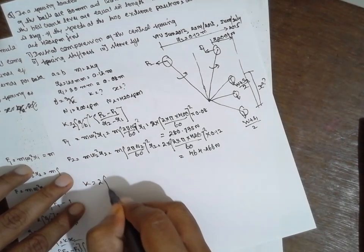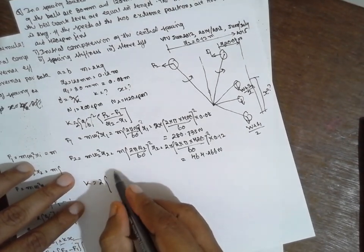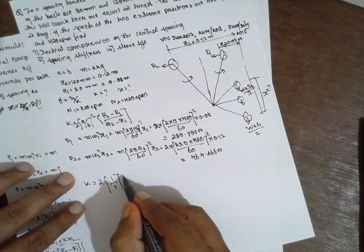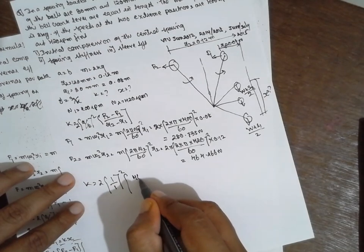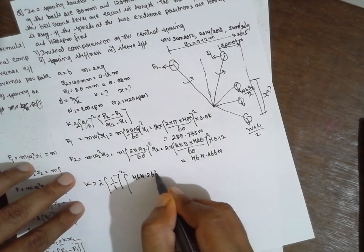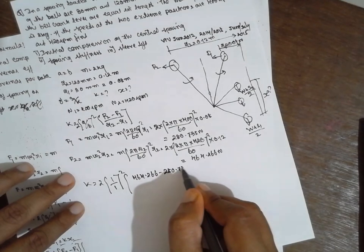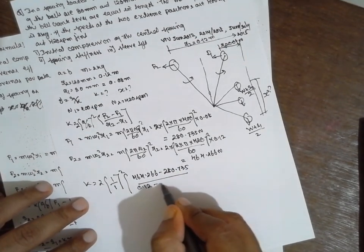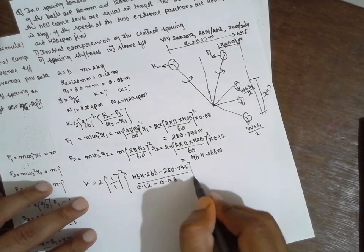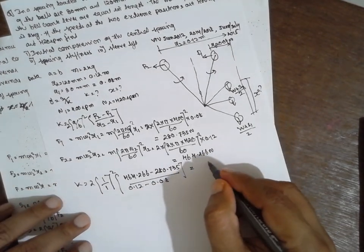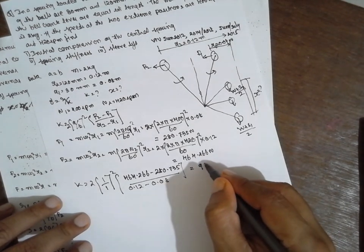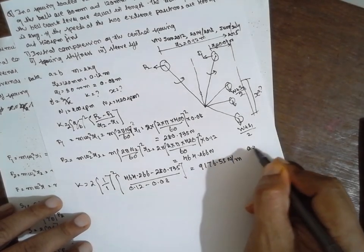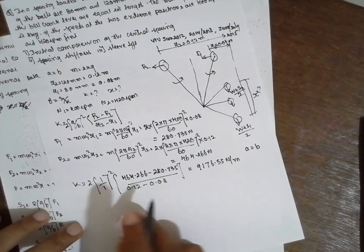Substitute in this formula, now you will get K value. K is nothing but 2, A is nothing but A is equal to B, therefore 1 divided by 1 whole square. F2 will be 461.266 minus 280.735 divided by R2 0.12 minus 0.08. Answer for K will be 9176.55 N/m where A is equal to B.